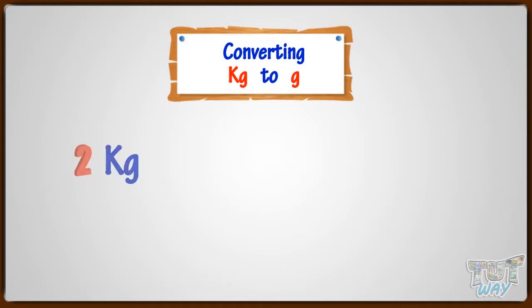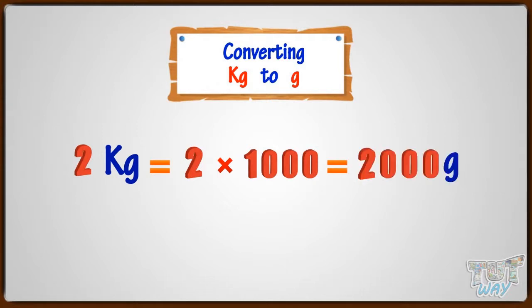So, two kilograms will be 2 multiplied by 1000. That is 2000 grams.